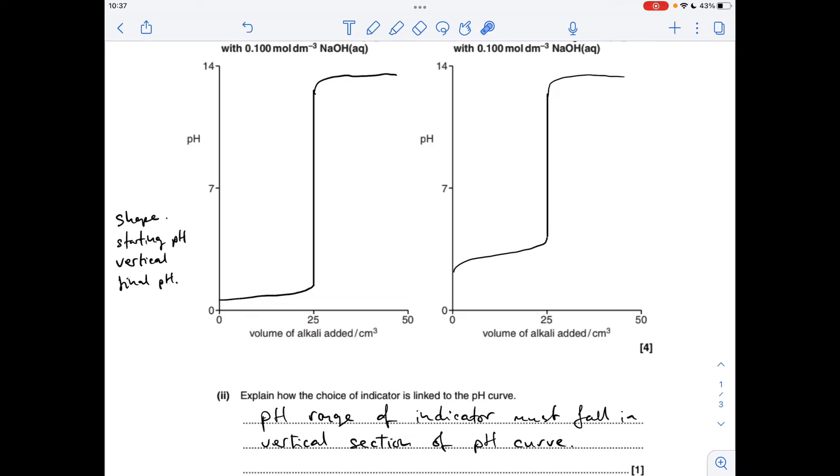Next part of A, explain the choice of indicator, how is it linked to the pH curve? So something like this: the pH range of the indicator must fall in the vertical section of the pH curve. So obviously you've got a bigger range here for the strong acid strong alkali, so as long as the indicator changes colour somewhere there, it's going to catch that magic drop that neutralises the acid. Likewise here, we've got a slightly lower range, but as long as your indicator falls within that range, it'll be suitable.